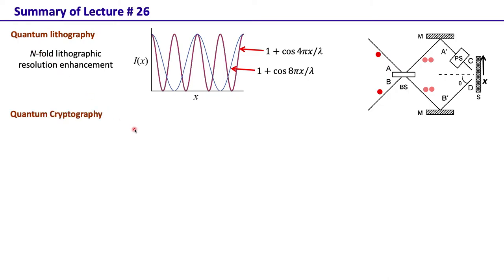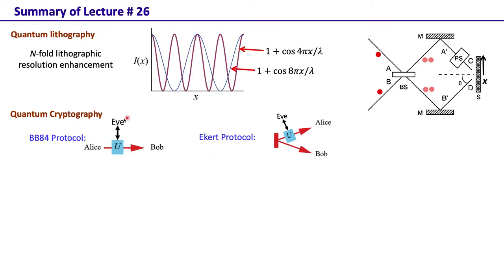The other application we looked at was quantum cryptography. In quantum cryptography we looked at two separate protocols. One is the BB84 protocol, the other one is called the Eckert protocol. BB84 protocol only requires single-photon, single-qubit states in polarization, while the Eckert protocol requires two-photon entangled states in the polarization degree of freedom. Both these protocols are very similar, though the Eckert protocol has some advantages, which we did not go through in detail.